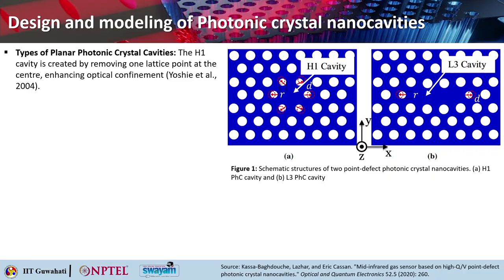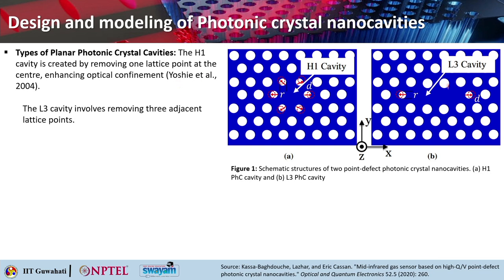Looking at the design and modeling aspects of photonic crystal nano cavities: the first figure shows an H1 cavity, where one hole is missing at the center — filled with the background material — created by removing one lattice point at the center. It enhances optical confinement and was reported by Yoshi et al. in 2004.